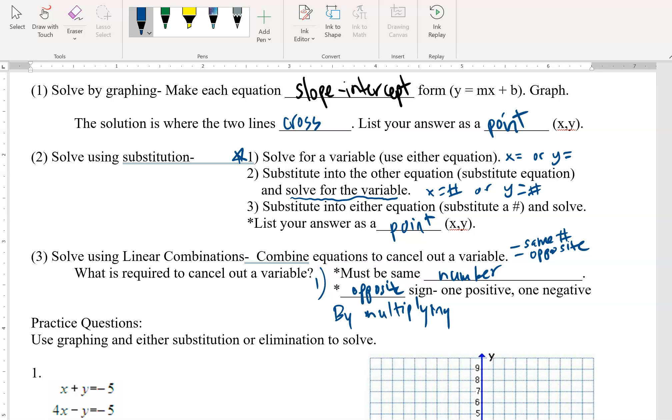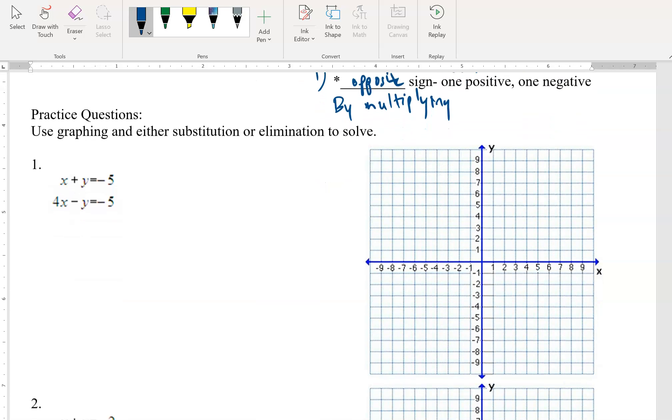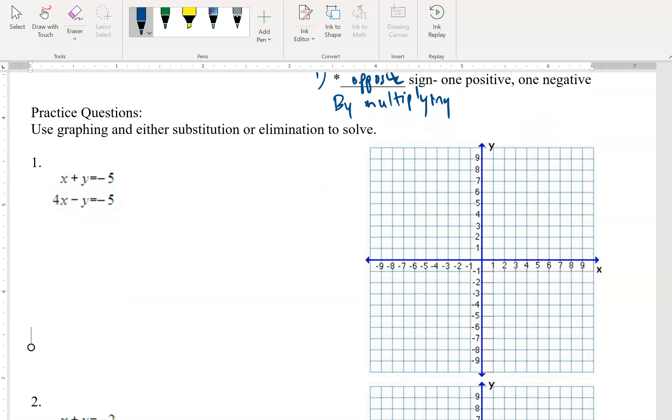So let's go ahead and go through a couple of these just to show you how this works. So on this first one we're going to start with graphing. So if I wanted to do graphing I need both of these equations to solve for y equals mx plus b. So that x plus y equals negative 5. This is not ready to graph. I need to move the x.